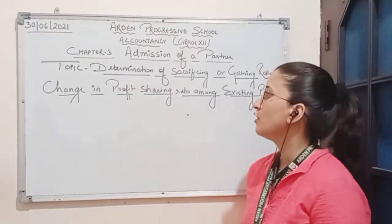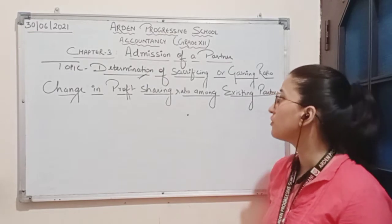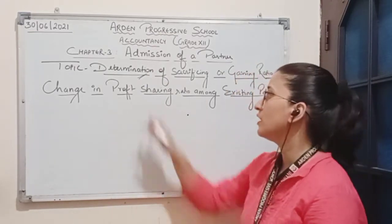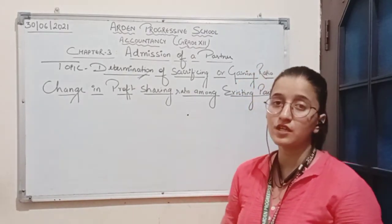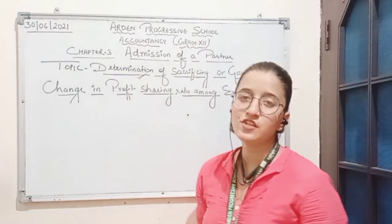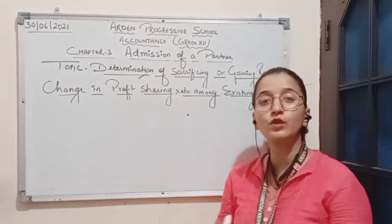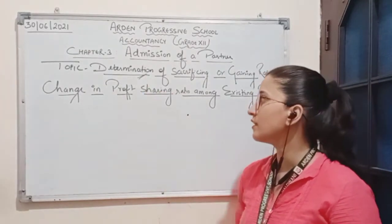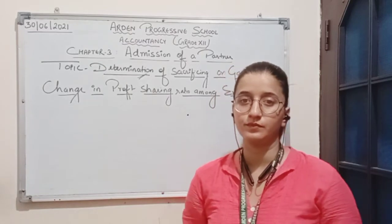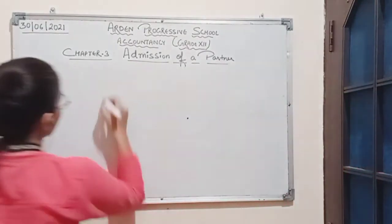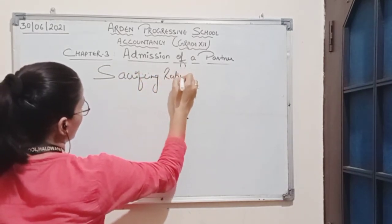One of the adjustments for the circumstance of change in profit sharing ratio among existing partners is determination of sacrificing or gaining ratio. One more adjustment we have already studied is accounting for goodwill — how to calculate the value of goodwill. The second adjustment which we will now discuss is determination of sacrificing or gaining ratio.